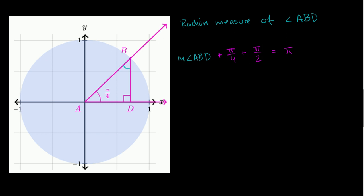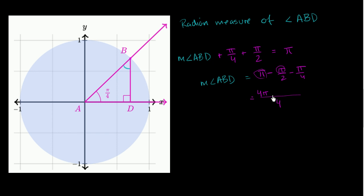We can solve for the measure of angle ABD: it equals pi minus pi over 2 minus pi over 4. Using a common denominator of 4, that's 4pi over 4 minus 2pi over 4 minus pi over 4, which gives us pi over 4. So the measure of angle ABD is the same as the measure of angle BAD — it is pi over 4.